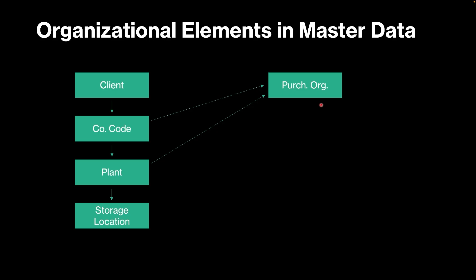Every storage location in a particular plant will have its own storage location data — for storage of that material, you maintain data at the storage location level. For the vendor, the vendor's name, address, and contact details you maintain at the client level. But for posting financial documents against that vendor, you maintain data at the company code level. And to prepare a purchase order for that vendor, you enter purchasing data at the purchasing organization level. Every organization structure element is attached to your master data — whenever you maintain master data, the system will ask you to enter the corresponding organizational element. At client level you maintain data for material and vendor; for company code and purchase organization you maintain vendor data; and for plant and storage location you maintain material data.